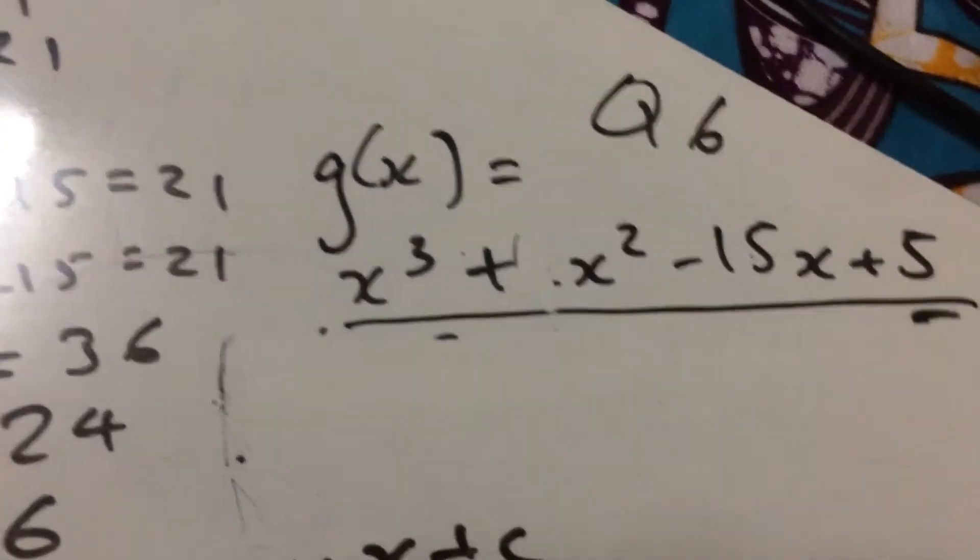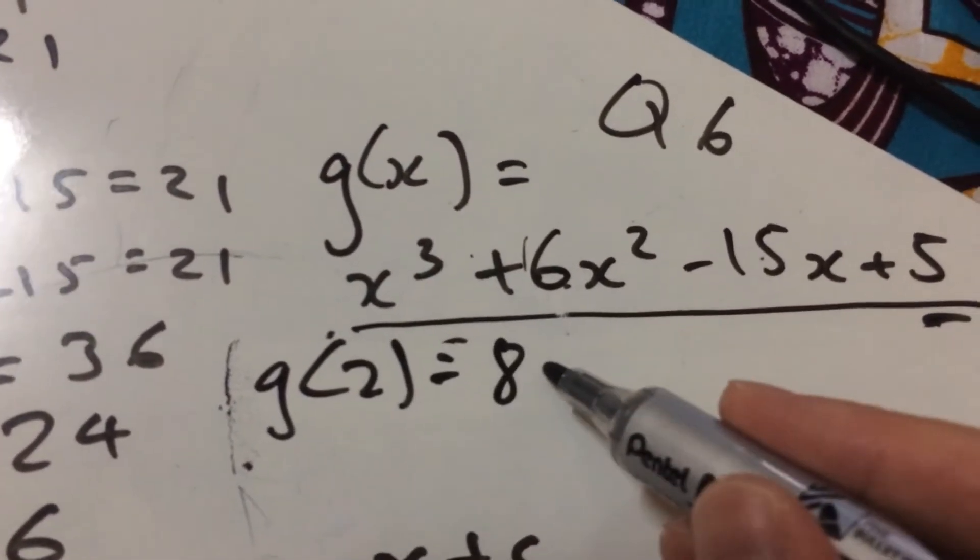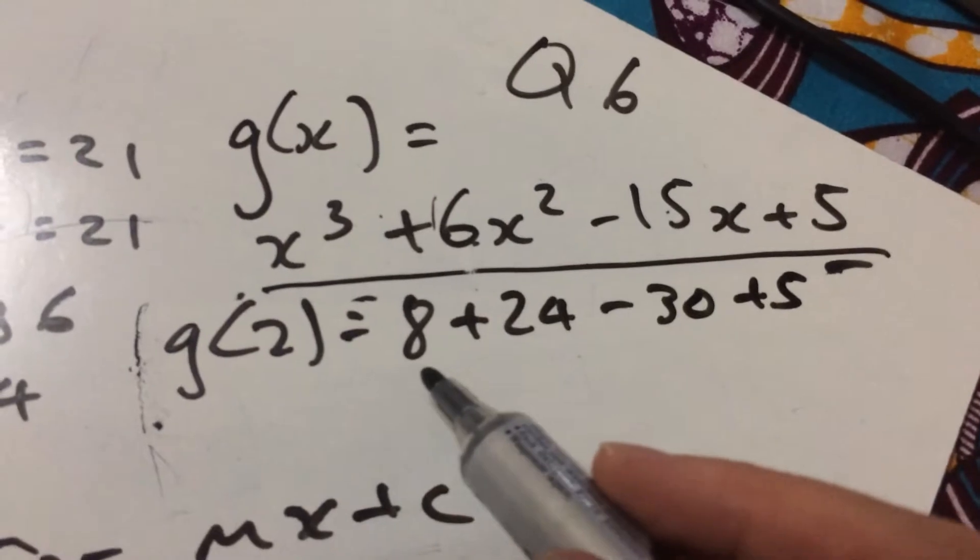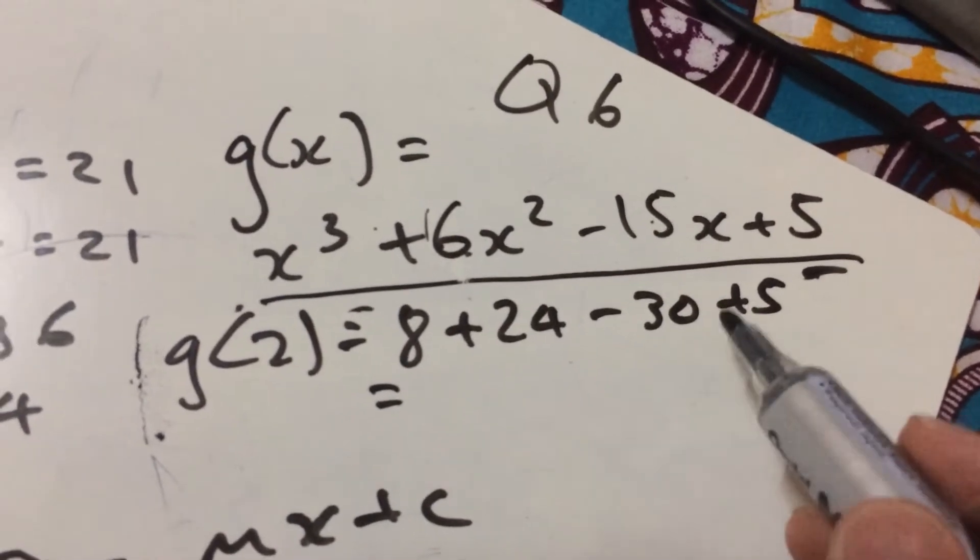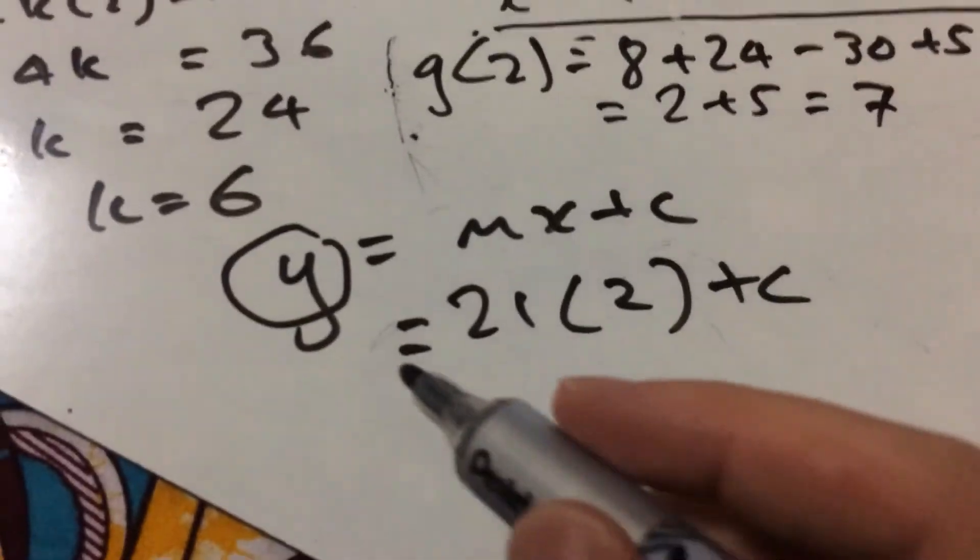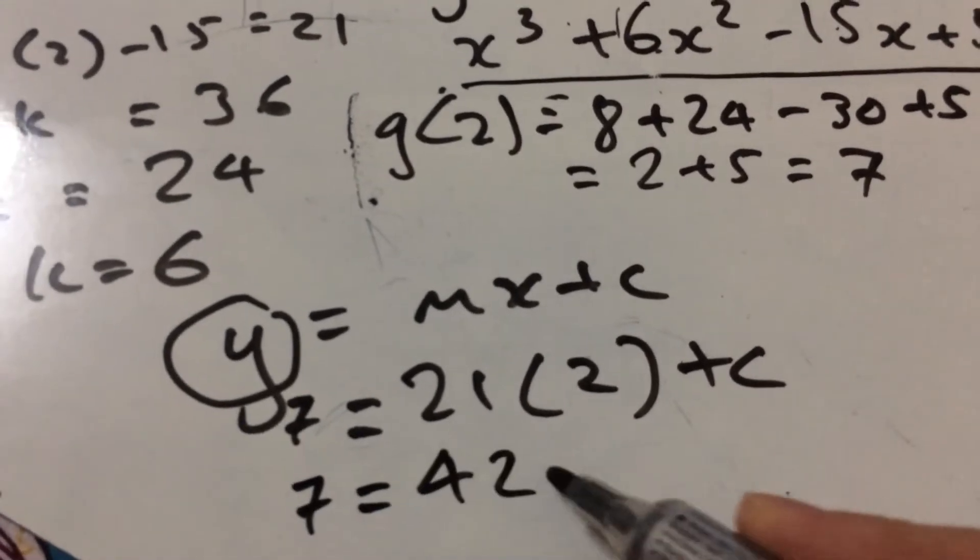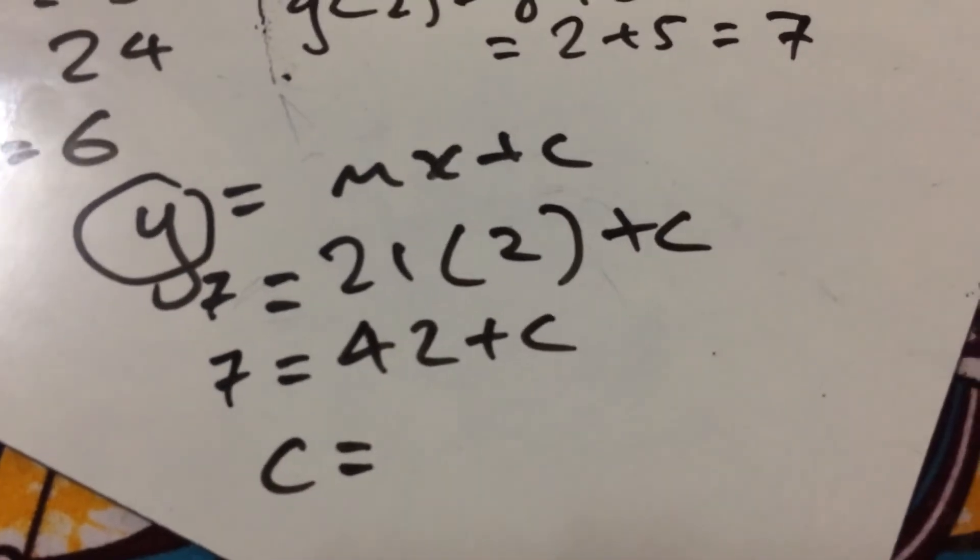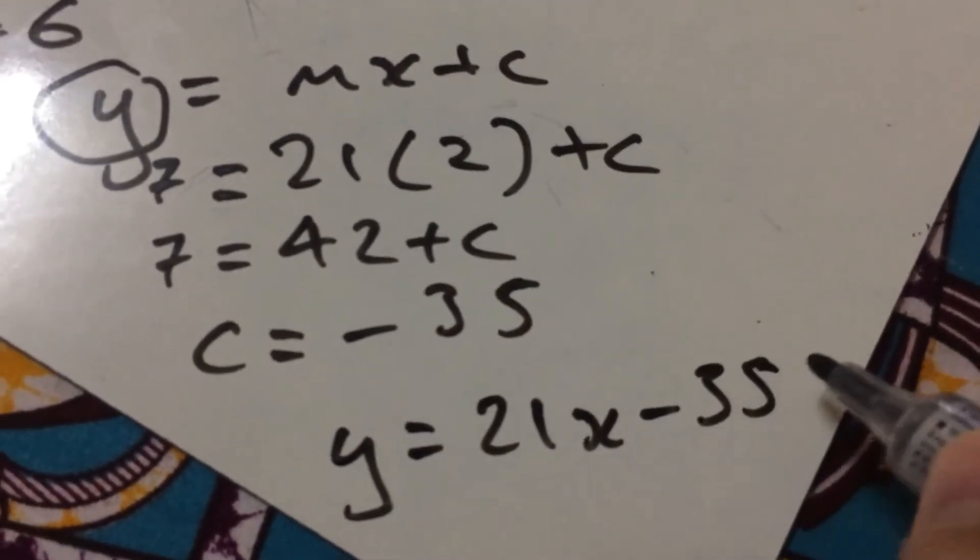Remember, we've just found out that k is 6. So, I can now say that g(2) is 8 + 24 - 30 + 5, so that's 32 - 30 is 2 + 5, so 2 + 5 is 7. So, y here is going to be 7, so 7 = 21 times 2, so that's 42 + c, so c is going to equal -35, if I've done my calculation correctly. So, we know that y = 21x - 35. That gets us a few more points in that paper.